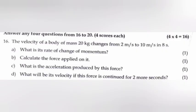2: Effective resistance in series, R is equal to 6 plus 6 plus 6 equal 18 Ohm. Question 16: The velocity of a body of mass 20 kg change from 2 m per second to 10 m per second in 8 seconds.